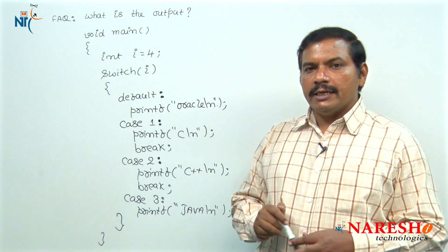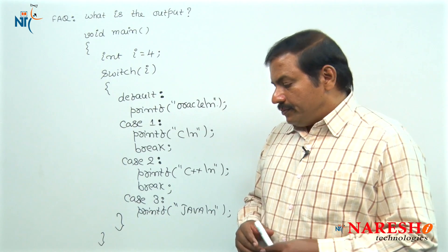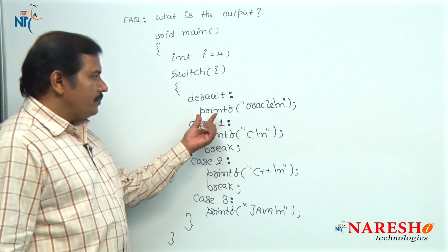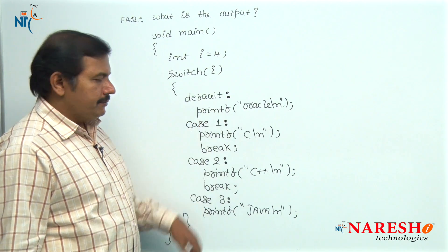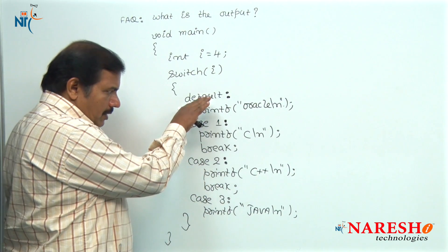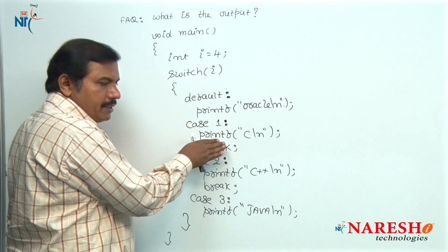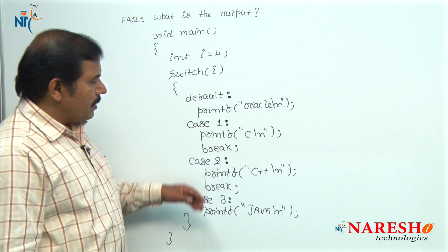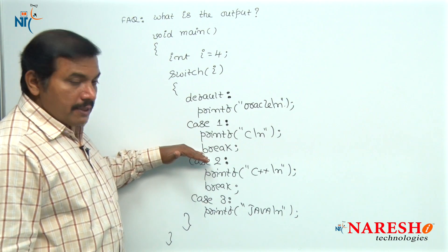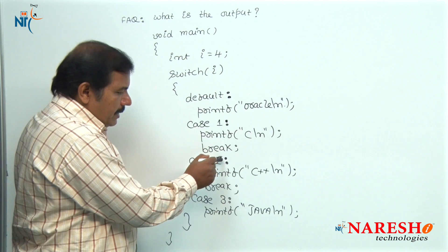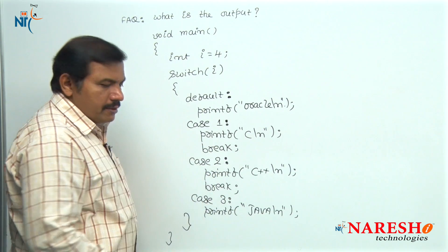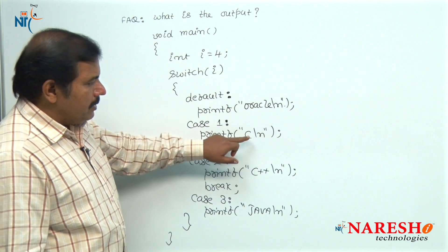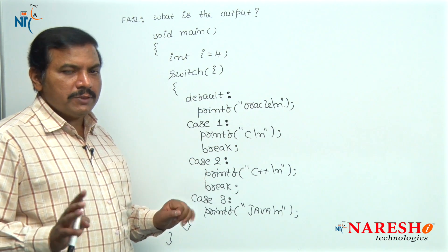Hence, the output you will get is oracle as well as C. Here there is no break statement after the default case statements. That is the reason control automatically switches to next case and the statements inside the next case are also executed. And then break encounters. Now this break terminates remaining case statements without execution.